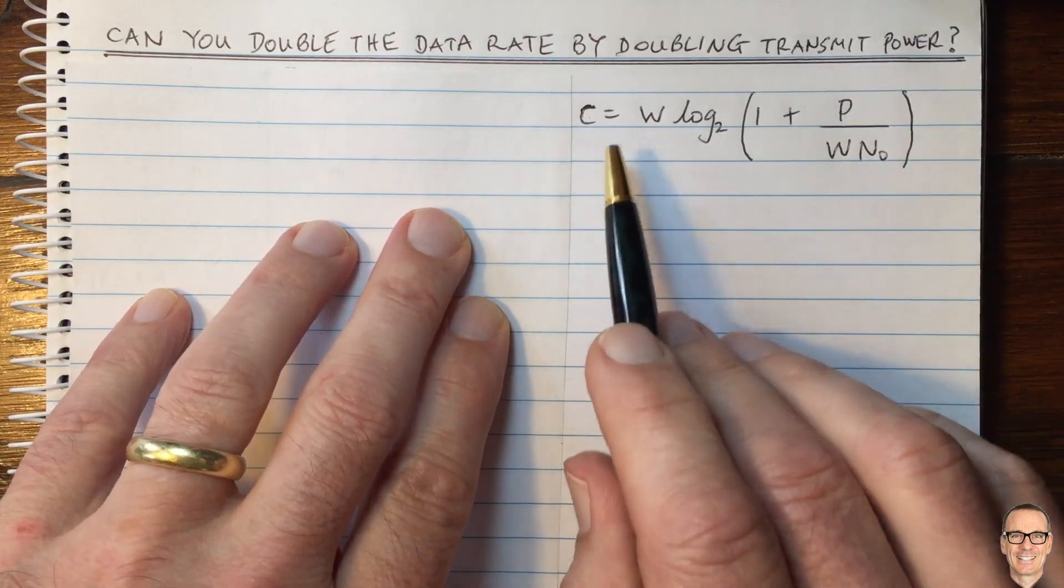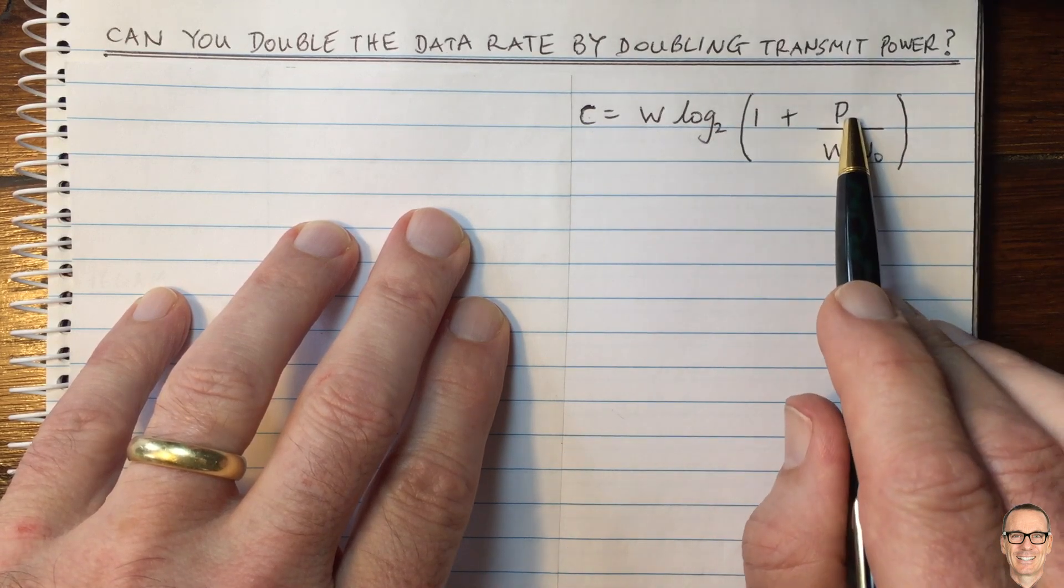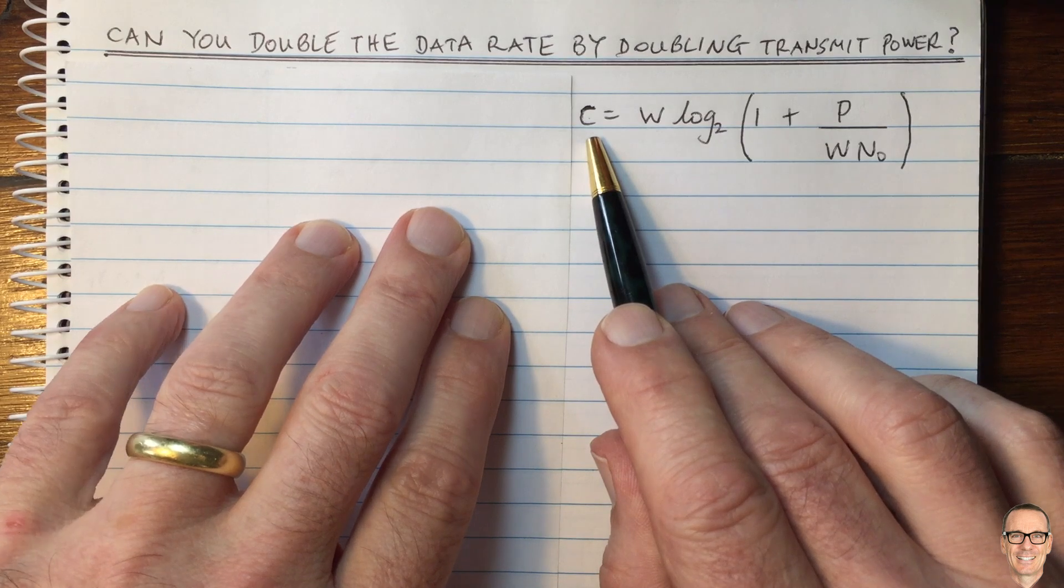But let's try to understand that. The capacity equation is a log function, so when the power gets doubled, it's inside a log, the capacity will not double.